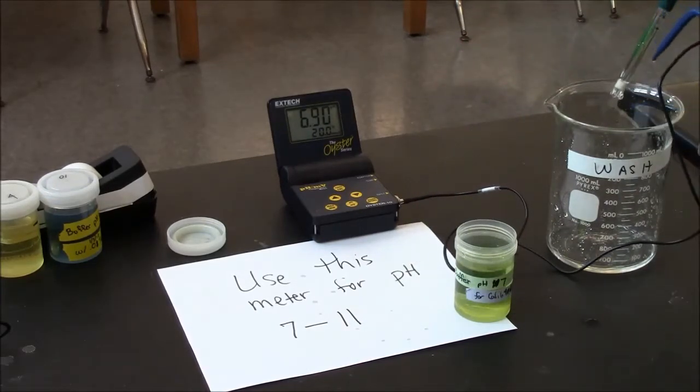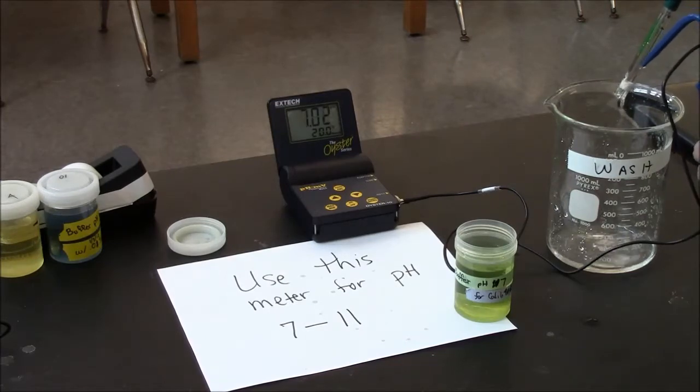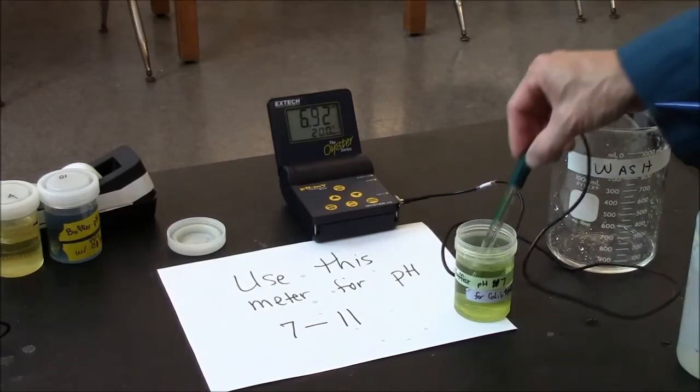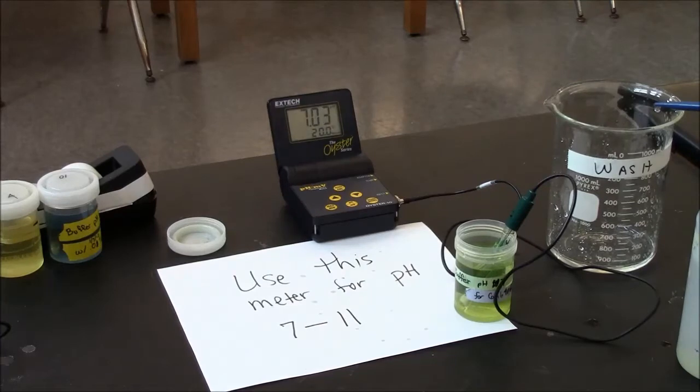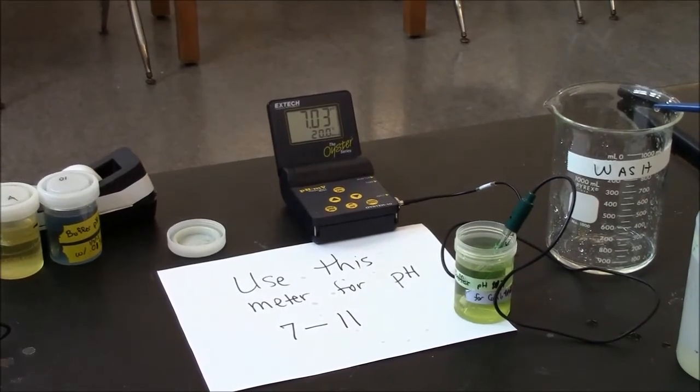Rinse off before you return it to its original buffer location. This one here should read a pH of 7.0 on the meter. The other one should read 4.0.